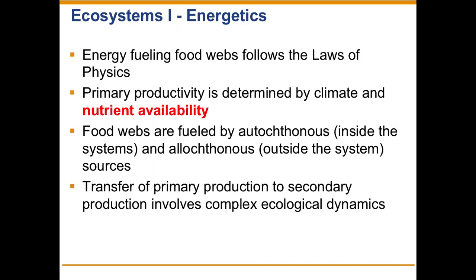The other component we didn't talk about much on Monday in terms of productivity is actual nutrient availability. We're going to talk about that in detail here — first, why nutrients are important, and then how organisms obtain nutrients and how nutrients cycle through a food chain or food web. We'll look at that across a number of different types of ecosystems.